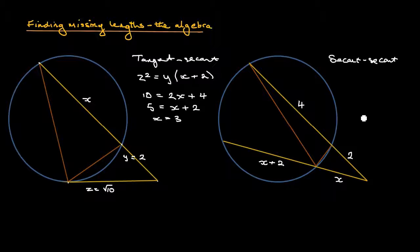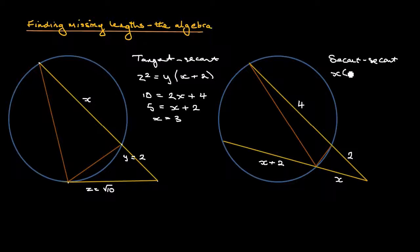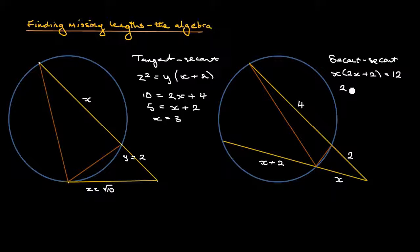The secant-secant theorem says the outside times the whole of the secant equals the other outside times the whole of its secant. The outside of the first is x, and the whole secant is x plus (x plus 2), which is 2x plus 2. The outside of the second is 2, and the whole is 4 plus 2 equals 6, so the right-hand side is 2 times 6 equals 12. So x times (2x plus 2) equals 12.